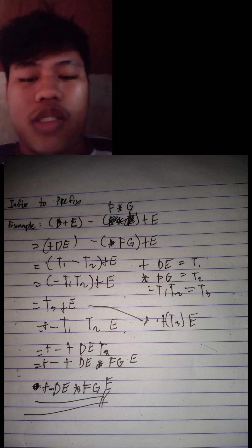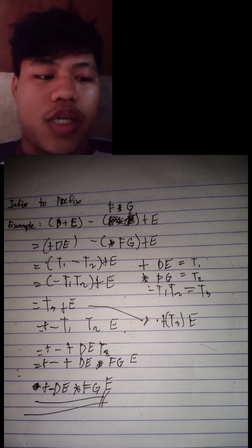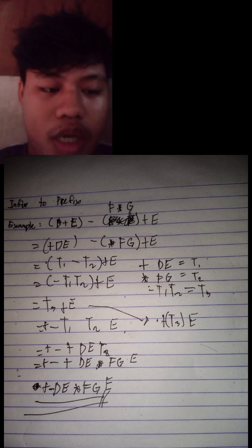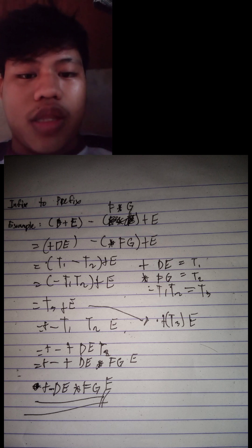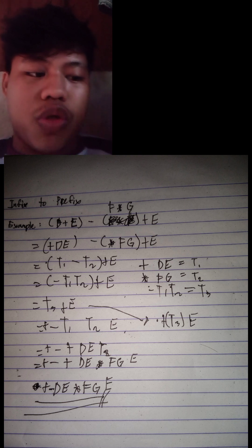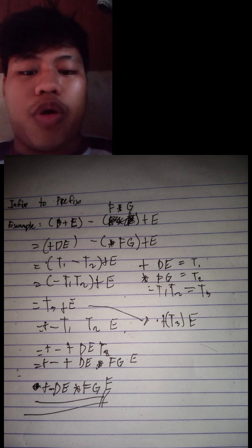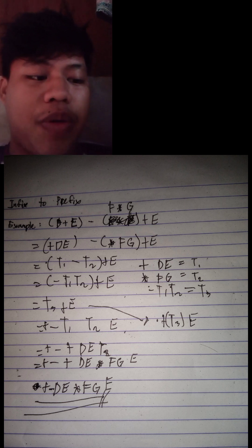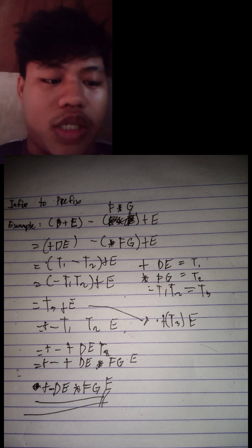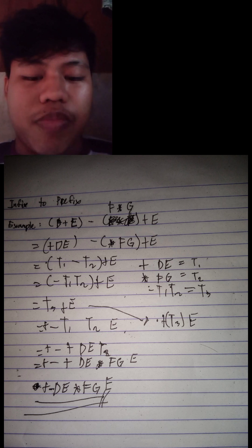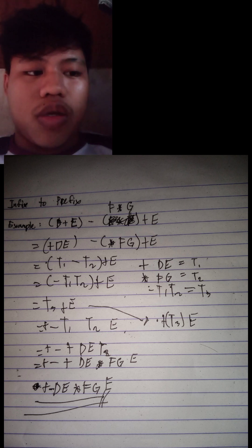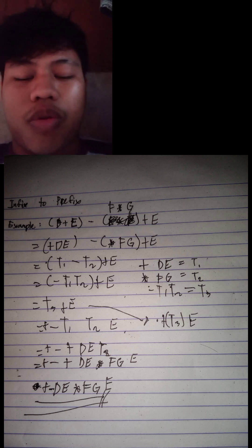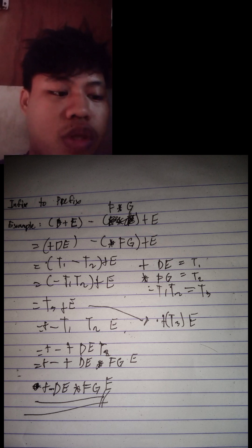This is my example of infix to prefix. The expression is: open parenthesis D plus E close parenthesis minus open parenthesis F times G close parenthesis plus E. To make prefix, you will put the operators in front of operands, like this: open parenthesis plus D E close parenthesis minus open parenthesis times F G close parenthesis plus E. The second line is already a prefix because the operators are in front of the operands.